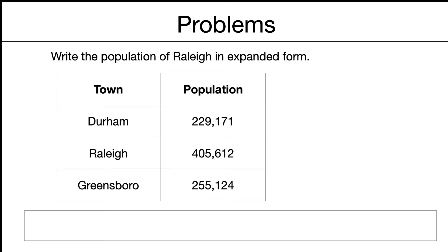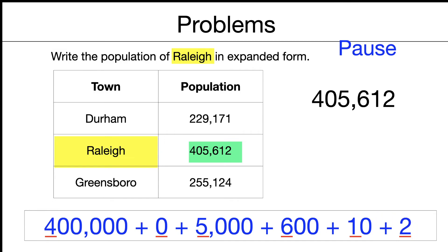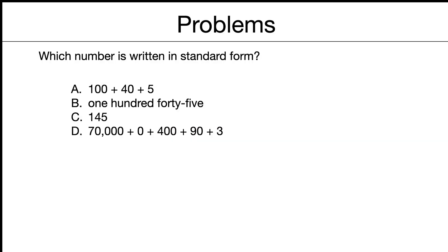Write the population of Raleigh in expanded form. So pause for a second. So we're looking for Raleigh. Those are all towns in North Carolina. So there's Raleigh on our table. And there's the number we need to work with. I'll just put that number up to the side there. And we're going for expanded form. I'm seeing six digits. I notice there's a zero there. We'll show the zero for this one. And we've got 400,000 plus the zero plus 5,000 plus 600, 10, and 12. And so that would be our answer in expanded form.